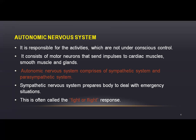Involuntary action is not under conscious control. For example, the cardiac muscles — the heart is not in conscious control, it is involuntary. Smooth muscles in the inner sides of the stomach, uterus, and glands — their secretion is also not under body control. These are examples of the Autonomic Nervous System.